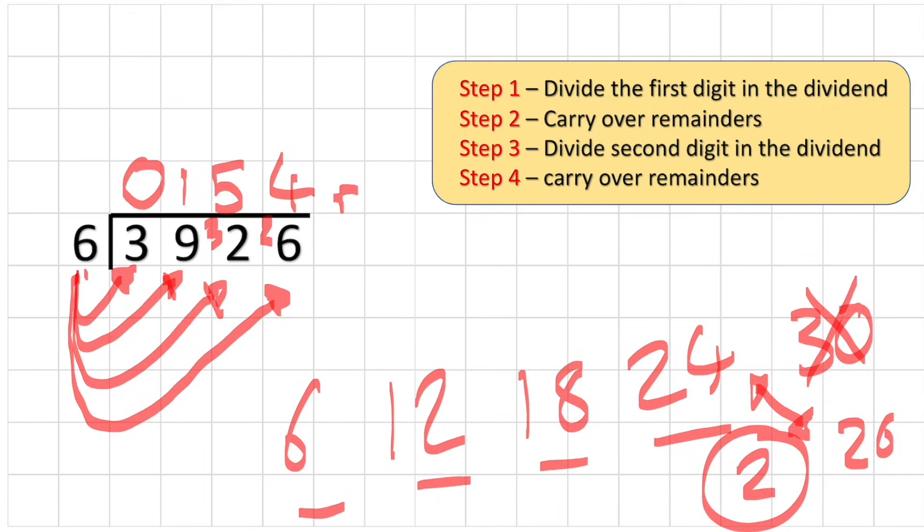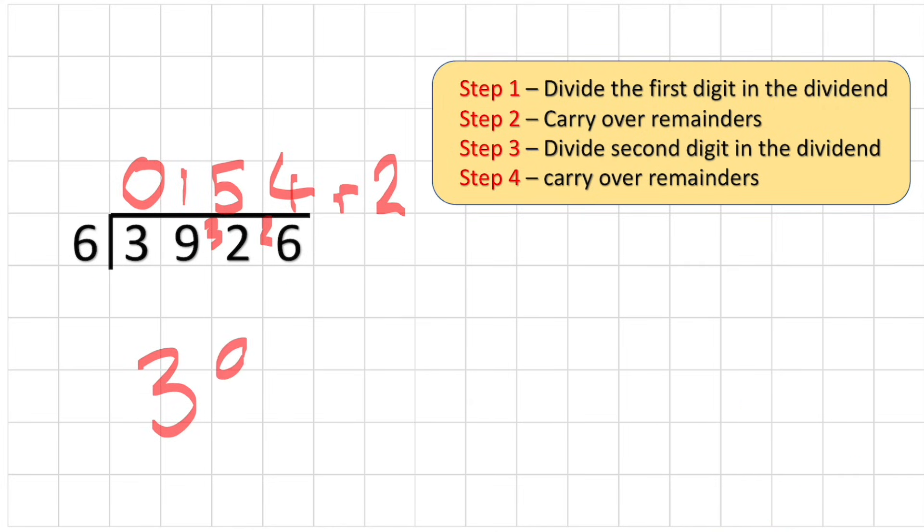2. So I have a remainder 2. So what's the answer to 3926 divided by 6? Is 154 remainder 2. Good job guys.